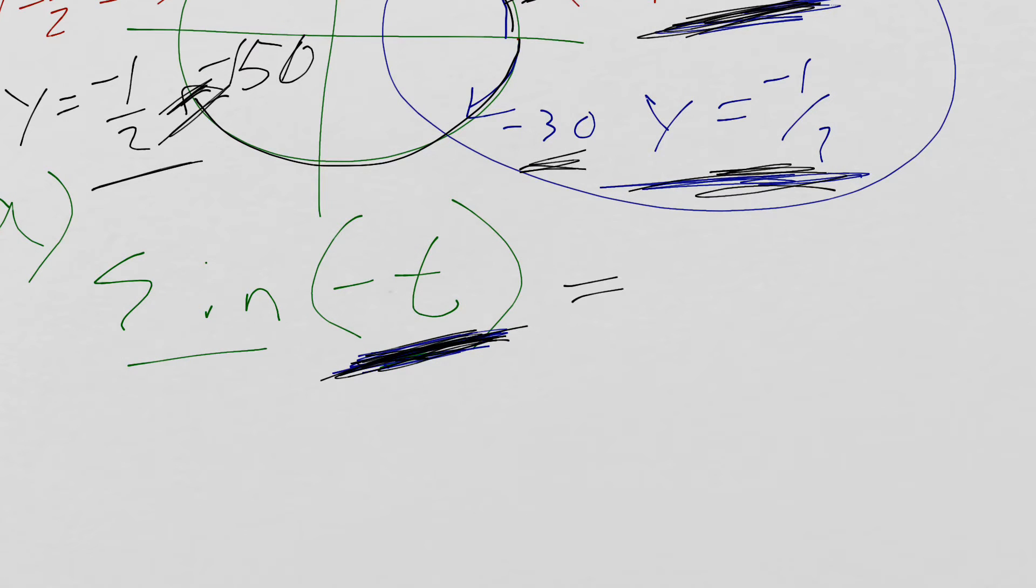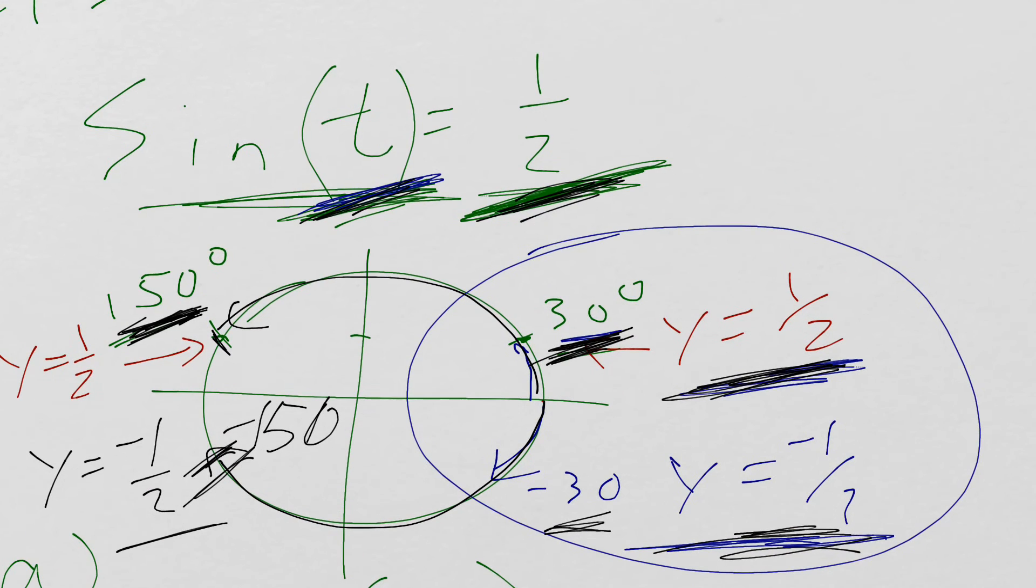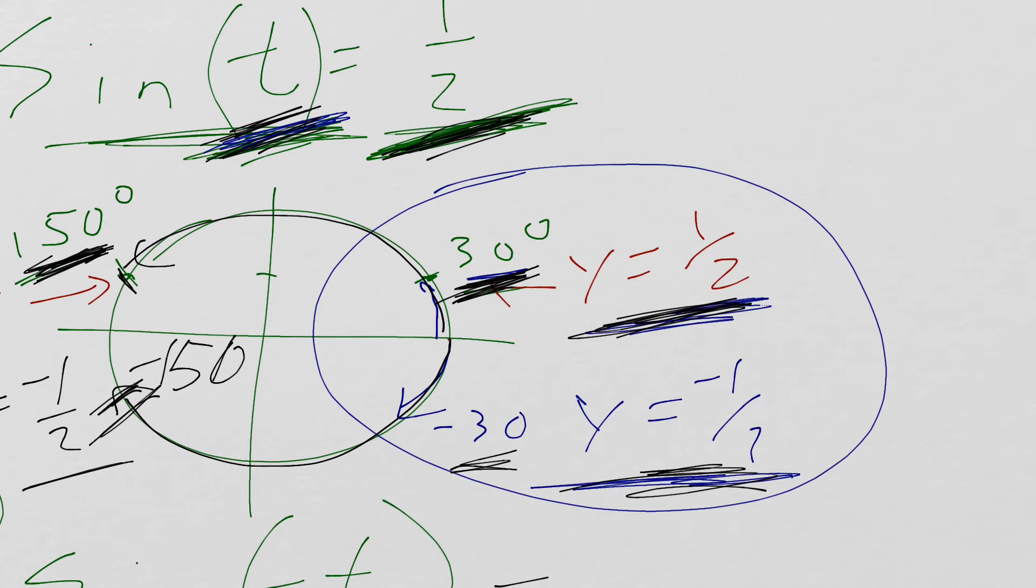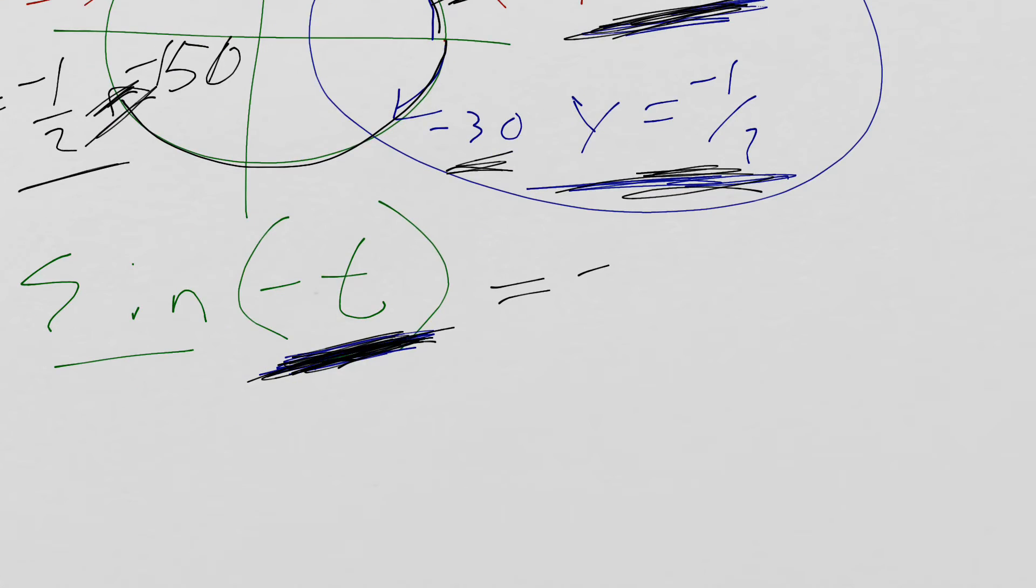So long story short, if your T changes to a negative T, for sine, you go from positive to negative. That's part A.